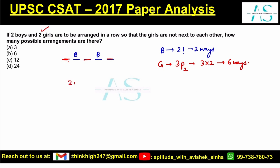So the final answer is 2 ways into 6 ways, which is 12 ways. Option C is our correct answer — in 12 ways you can arrange two boys and two girls such that no two girls are next to each other.